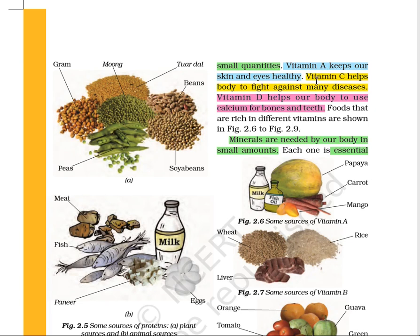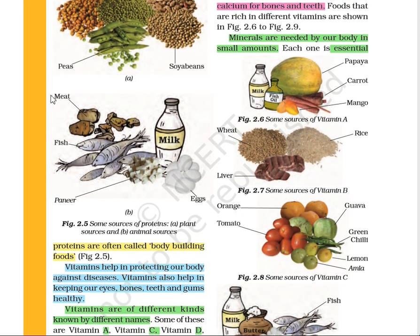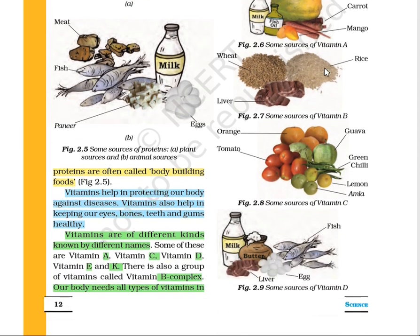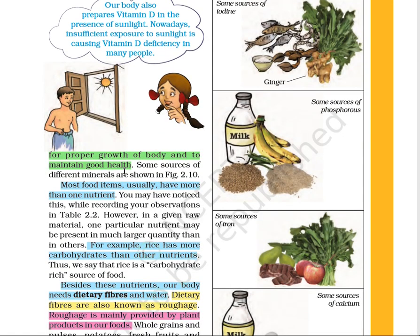For example, vitamin A keeps our skin and eyes healthy. Vitamin C helps our body to fight against many diseases — thus vitamin C provides immunity. Vitamin D helps our body to use calcium for bones and teeth; if we have a good quantity of vitamin D, the calcium in our food will be fully utilized by our body. Minerals are needed by our body in small amounts and are essential for protection and proper growth.